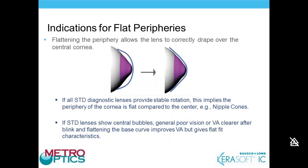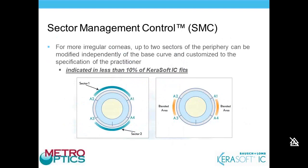For the flat periphery situation, the lens may be ideal centrally for a steep nipple cone, but peripherally there's significant space that could fill with bubbles, causing the lens to act too tight. This is why the 8.2 flat-2 lens is included in the diagnostic set. Sector management control allows you to change the periphery in two different sectors. This is indicated in less than 10% of fits — rarely needed, but particularly useful in cases with edge fluting from corneal transplants.